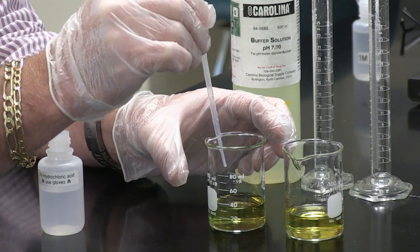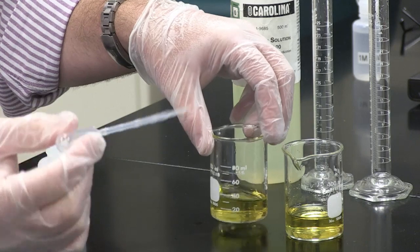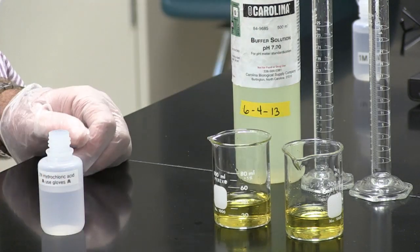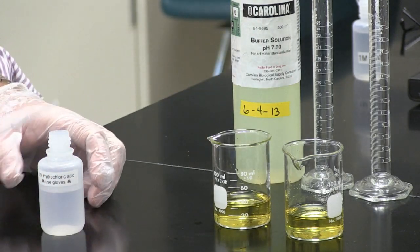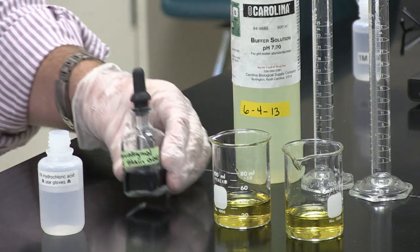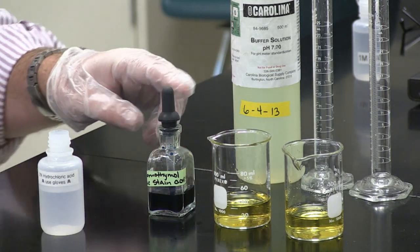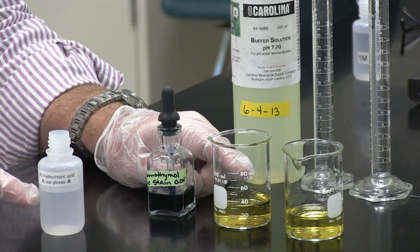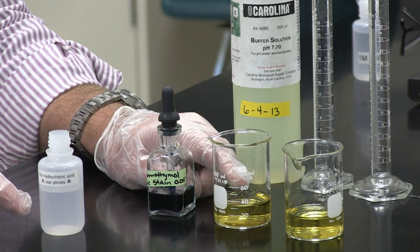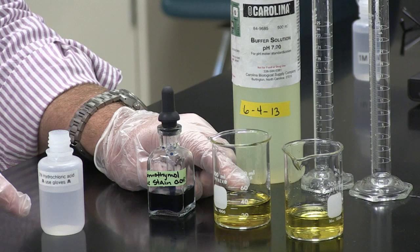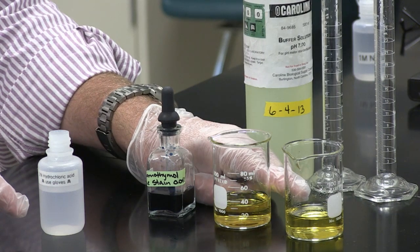If I squirt the remainder of the dropper in there, I can have them both turn a nice yellow. So at a pH below 7, bromothymol blue turns a yellow color. It took many more drops of the hydrochloric acid to turn the buffer solution from blue to yellow as opposed to the water.